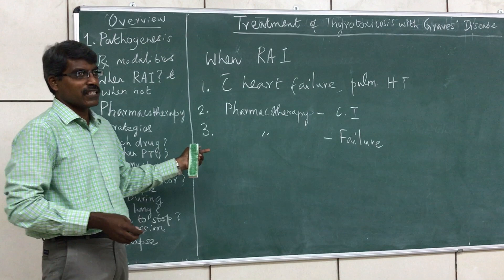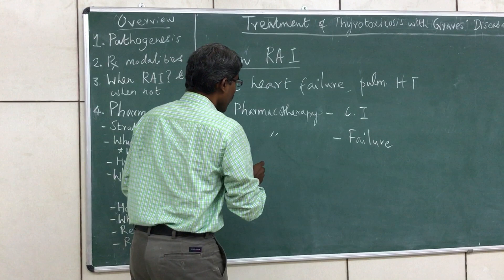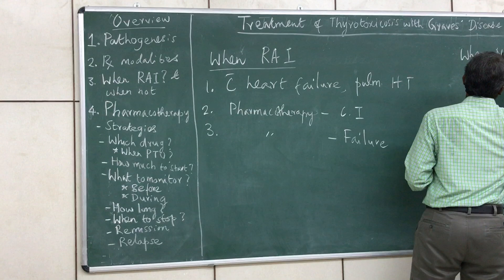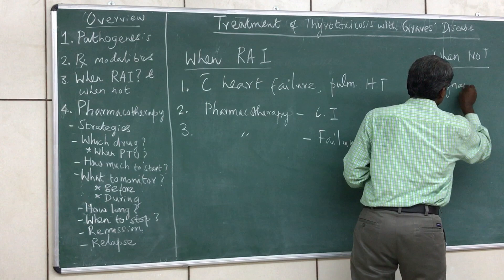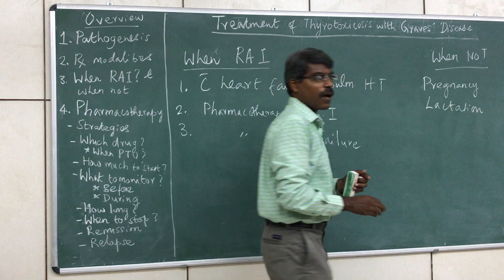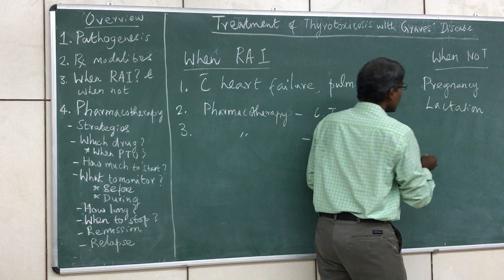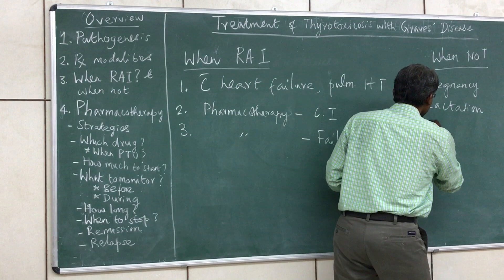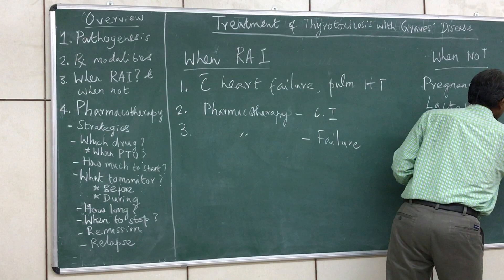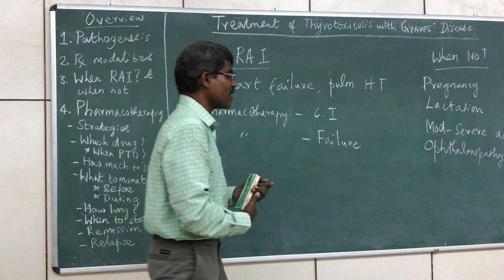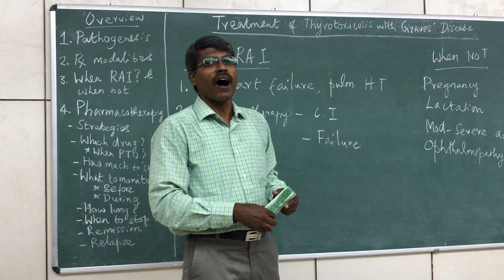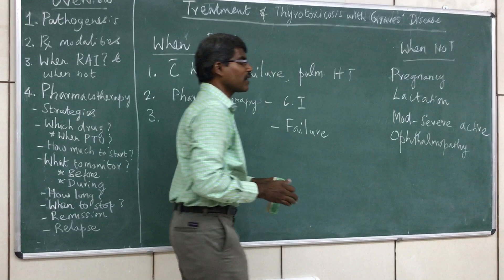We should also see when radioactive iodine should not be used. The first and most important contraindication is pregnancy and lactation — it is absolutely contraindicated in both. The second condition where it should not be used is in patients with moderate to severe active Graves ophthalmopathy, because radioactive iodine is said to aggravate this condition.